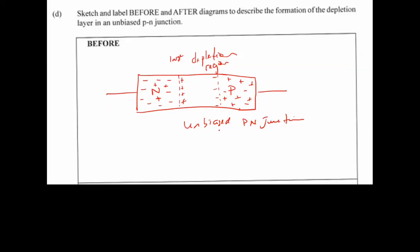Next they want us to draw what happens after — the 'after' diagram. The question says before and after, so what we have drawn is the 'before.' Now we need to draw what the system looks like after it has become biased. There's a bit of a trick here because the system can be biased in two ways: forward bias or reverse bias. I'll assume they want forward bias, so let's draw that.